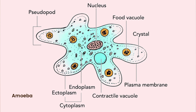This happens through simple diffusion. Oxygen dissolved in the water tends to diffuse into the body of the amoeba, and carbon dioxide also diffuses out through the body surface back into the environment.